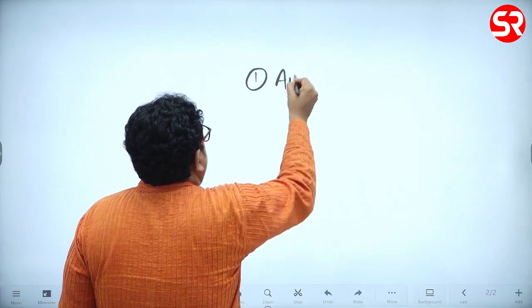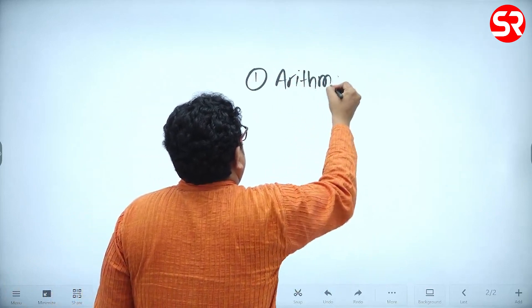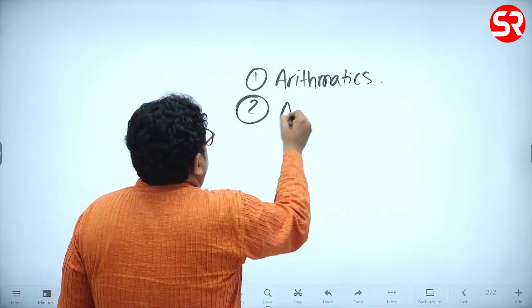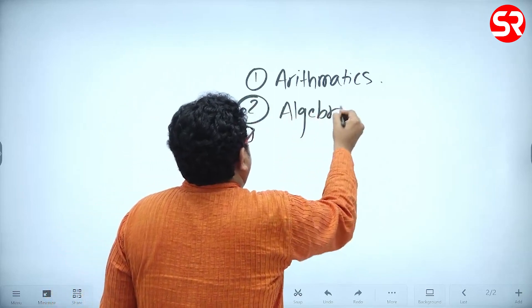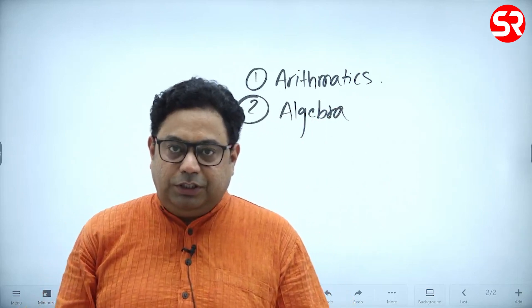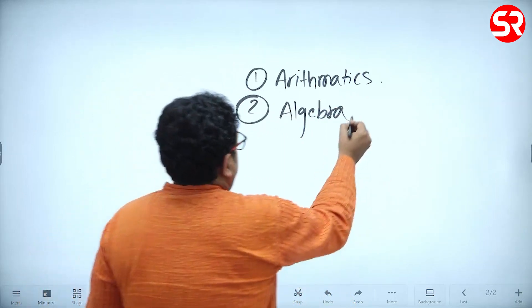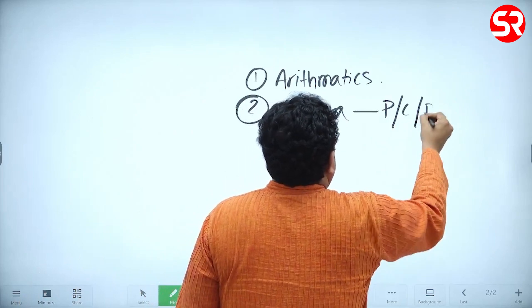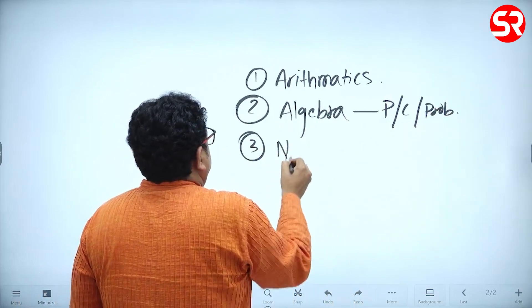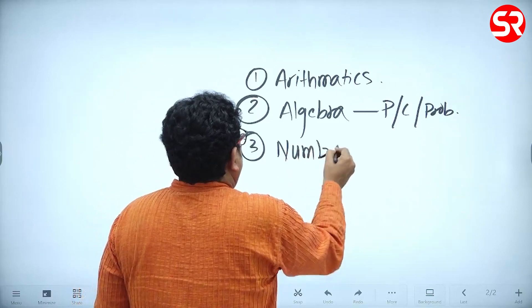All arithmetic, algebra - when we talk about algebra, permutations and combinations have been thoroughly covered. Permutations, combinations, probability, and numbers - numbers have been really important for the past four years.